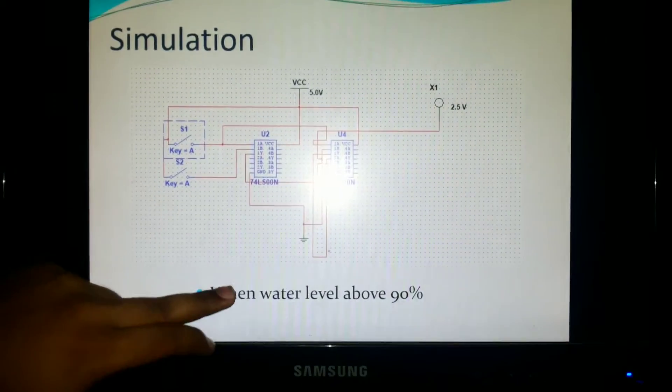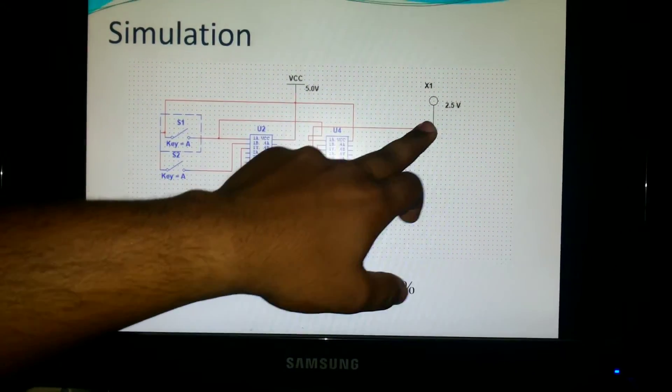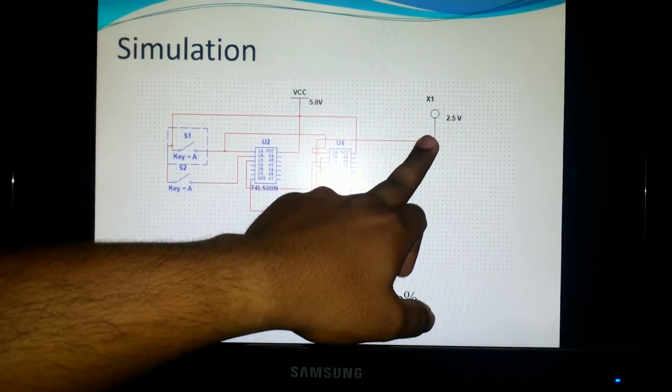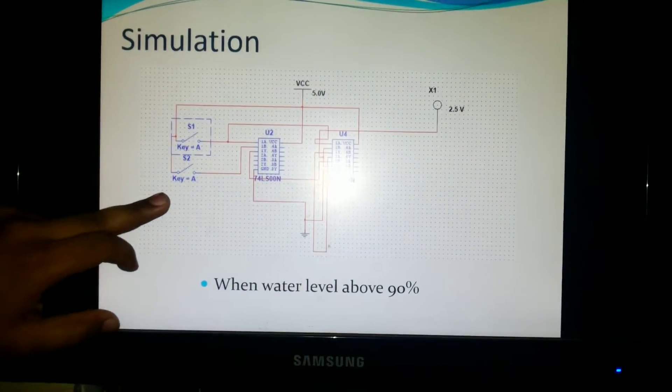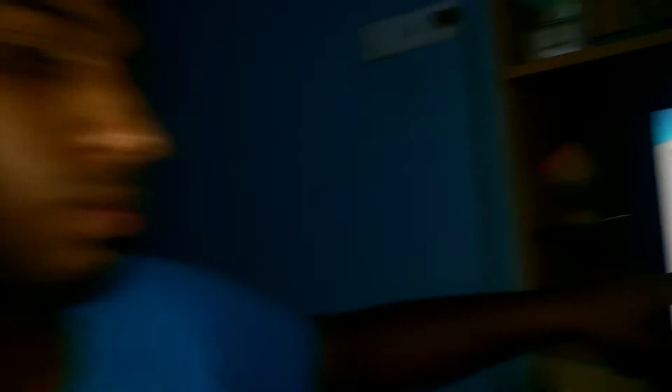And when it goes above 90 percent, the sensor becomes off and the bulb is switched off. That's all from me. Thank you.